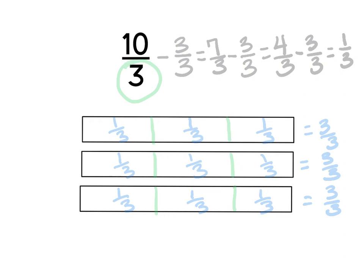There are no more whole numbers, because a fraction greater than one has a numerator larger than the denominator, and that's not the case here. So I'm going to go back and box in all of my three-thirds and rename them as one whole. This tells me the whole number in my mixed number: one plus one plus one equals three, and I have one-third left over. So ten-thirds equals three and one-third.